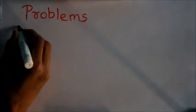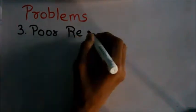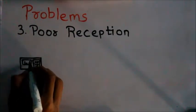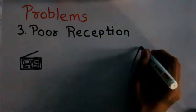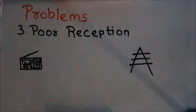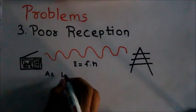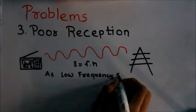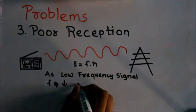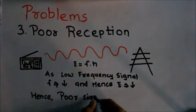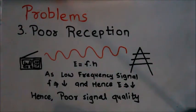The third problem is poor reception. The energy of an electromagnetic wave like radio waves is given by this equation, where F is the frequency and H is Planck's constant. From this equation it is clear that for low frequency signals, the energy of this signal is very low, and hence by the time they reach our radio they become weak and lead to poor signal quality.